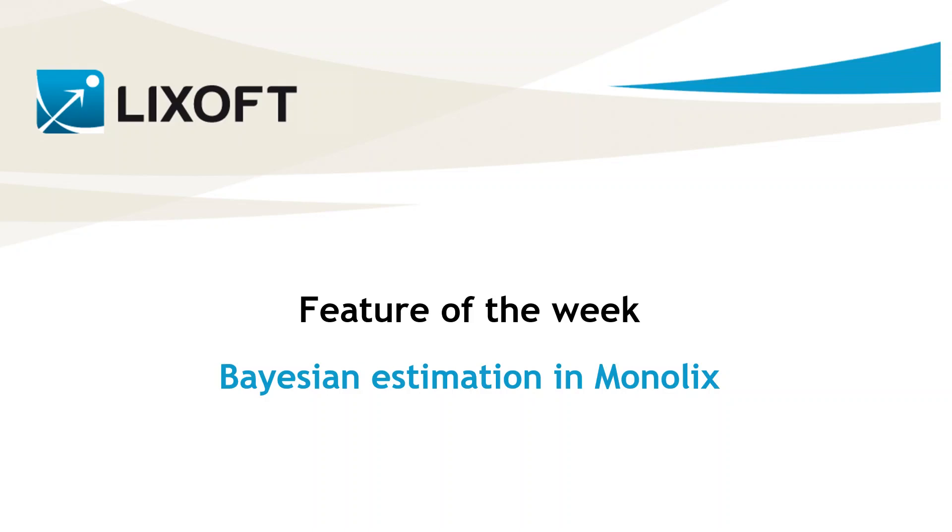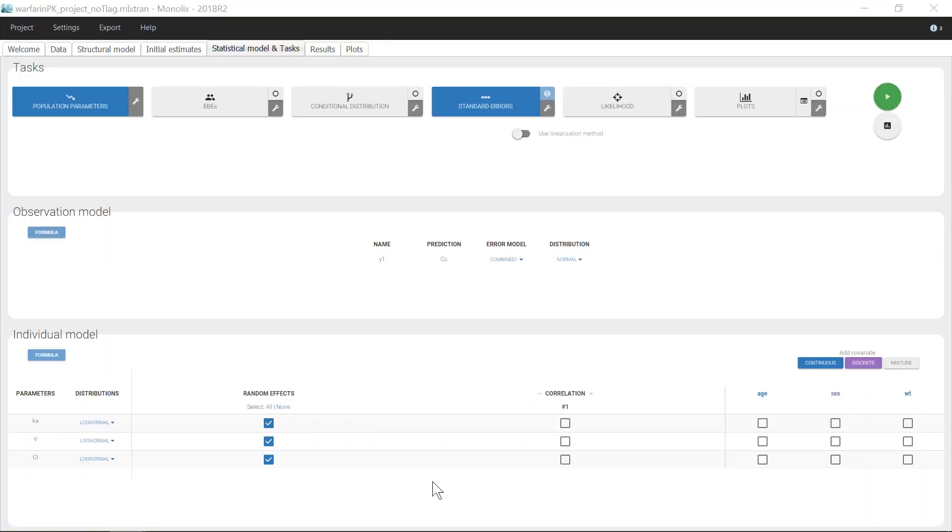In this video, I will show how to take into account prior information for Bayesian estimation of population parameters in Monolix. Let's begin with an example.